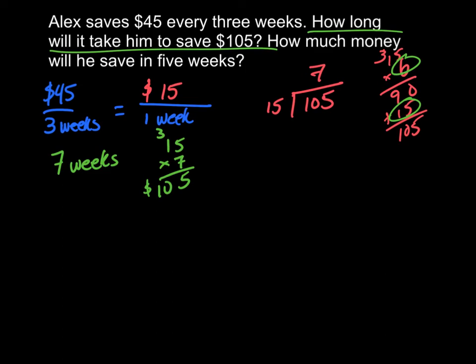How much money will he save in 5 weeks? Now, because I have the unit rate here already, I can just say if it's $15 in one week, and I want to know 5 weeks, I can do 15 times 5. Multiply it out, and then in 5 weeks he gets $75.